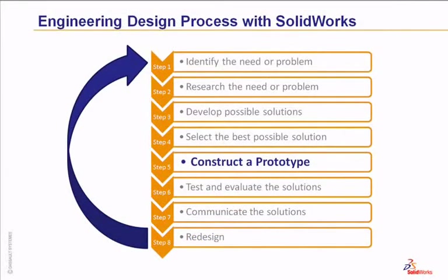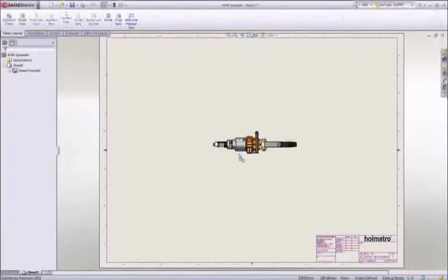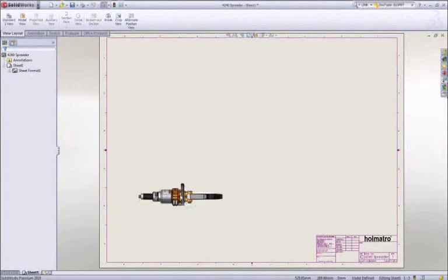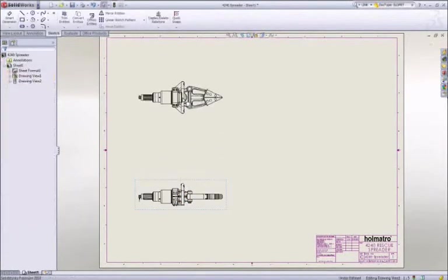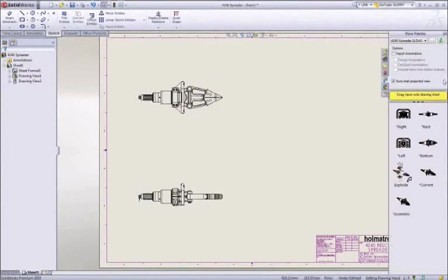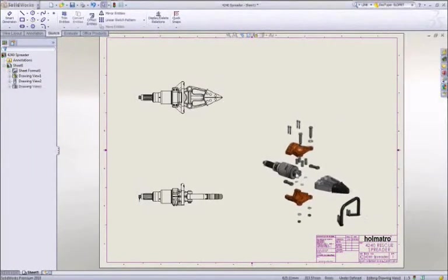Step 5 is to construct a prototype. Sometimes prototypes are created directly from a part or assembly through a rapid prototype machine. Usually the 3D design concept is transformed into a 2D drawing. SOLIDWORKS can automatically generate a drawing from your 3D parts and assemblies. The drawing is then given to a machinist or manufacturer who will construct the product according to the specifications outlined in the drawing.